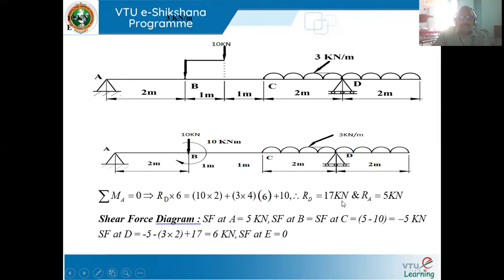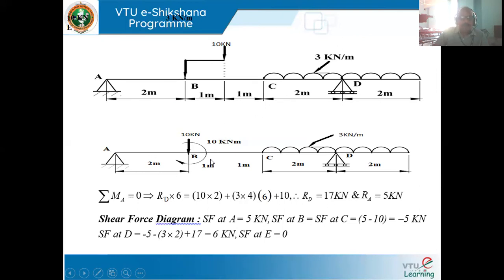Using the second static equilibrium condition — upward forces equal downward forces — RA plus RD must equal 10 plus 3 into 4, which is 22 kilonewton. Subtracting RD of 17, we get RA equal to 5 kilonewton. Note that when considering upward and downward loads, we should not take the couple into account.